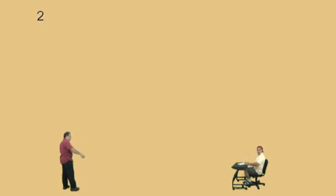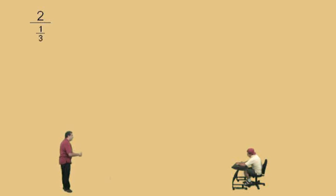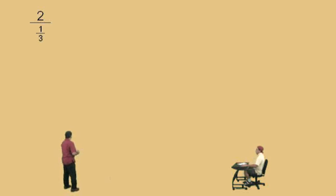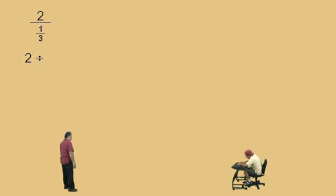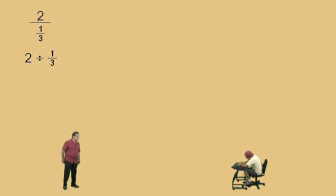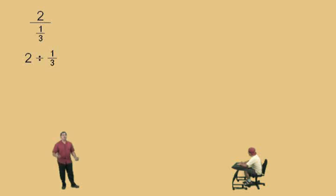All right, Charlie, you see that 2 up there? We're going to take that 2 and we're going to divide it by 1/3. If we want to use the division symbol, we can write this as 2 divided by 1/3. What we are being asked here is how many 1/3s go into a 2.